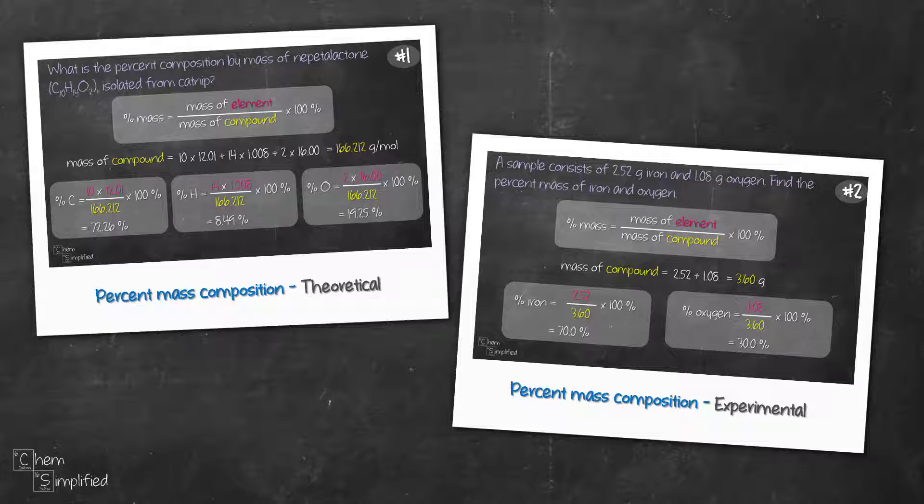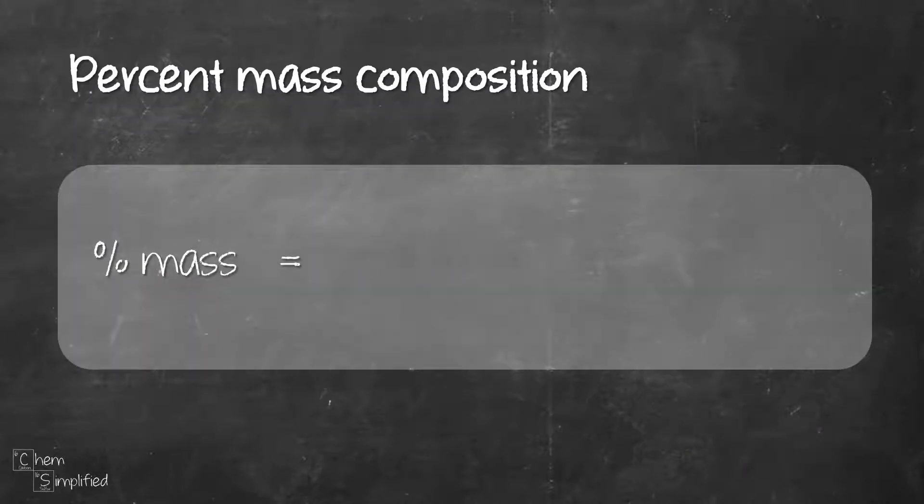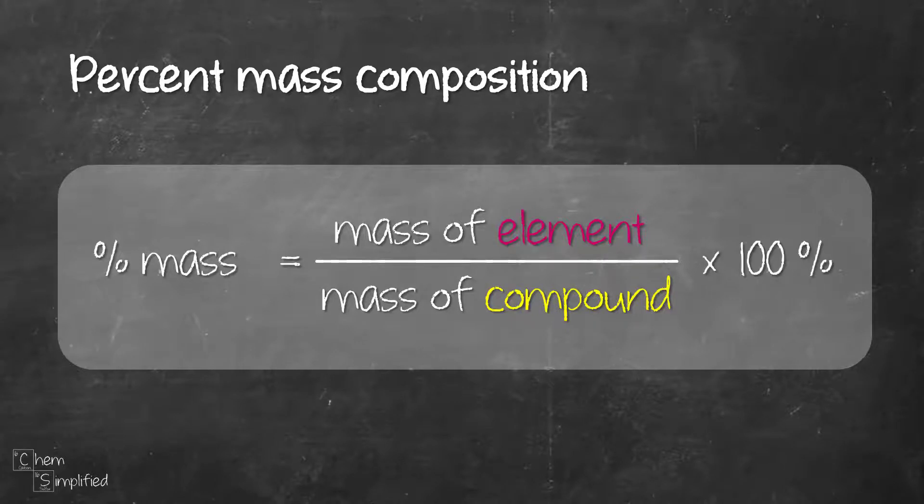One is through theoretical calculation and another is using experimental values. The formula for percent mass is mass of the element divided by the mass of the compound times 100%. Let's use some examples to test out this formula.